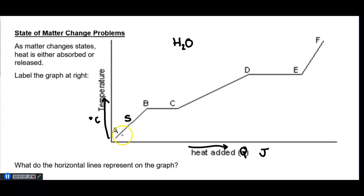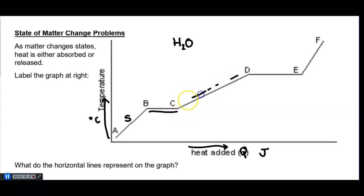We increase the temperature, and then you hit this magic point where the graph levels out. The temperature is not changing from B to C. Then we continue to add energy, and we start to see a temperature change again from C to D — that is when the matter is a liquid. Particles are just speeding up as they increase in kinetic energy.